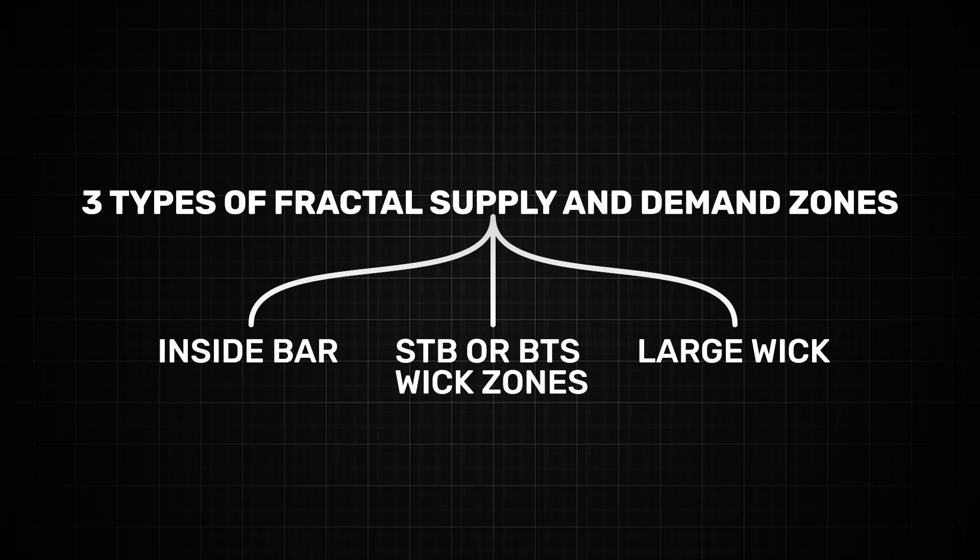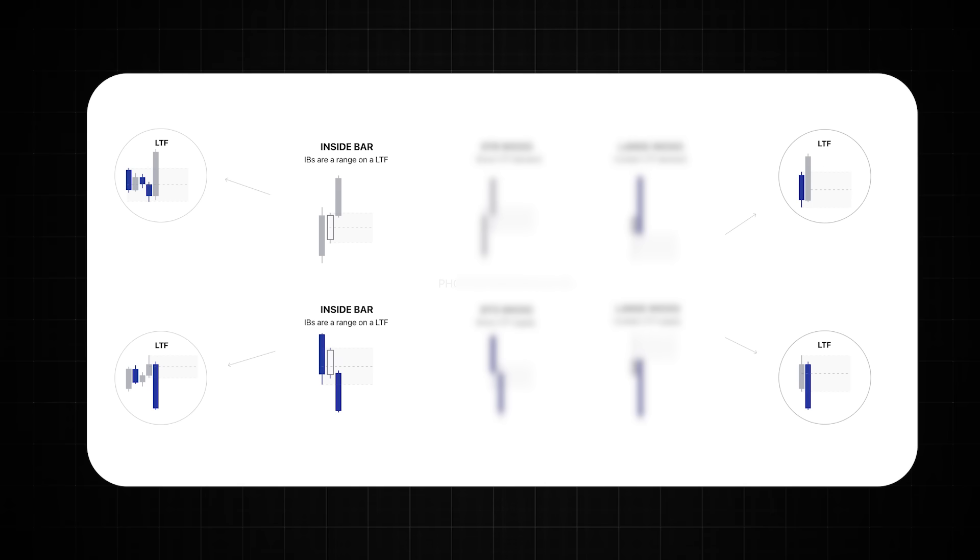Here are three types of fractal supply and demand zones. The first is an inside bar. This is when a candle fails to break the previous candles high and low and it trades inside of it. Inside bars are a range on a lower time frame. The second type of fractal zone is sell to buy or buy to sell wick zones. For a sell to buy wick zone when price is bullish and moving to the upside it looks like there isn't a demand zone because price doesn't form a pullback on that time frame but those wicks represent a pullback on a lower time frame. And the exact opposite happens for buy to sell wick zones which represent lower time frame supply.